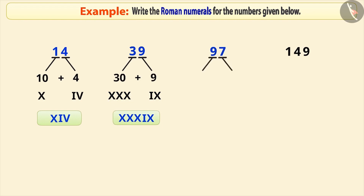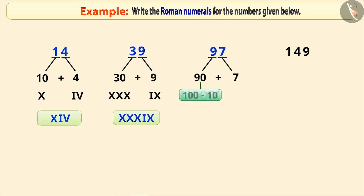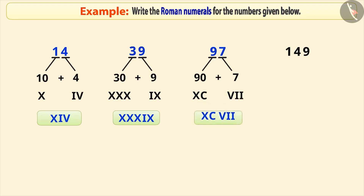97 is equal to 90 plus 7. Here, we cannot repeat the symbol of 10 more than 3 times to make 90. The right way is to subtract 10 from 100. We express 7 like this, and writing them together, we make the Roman numeral 97.